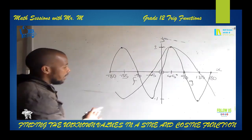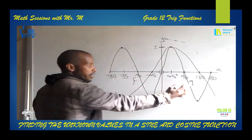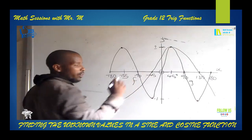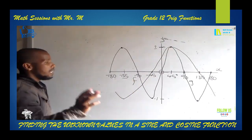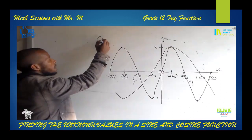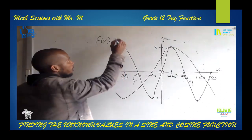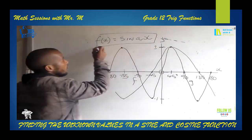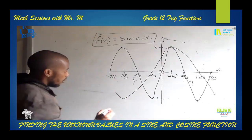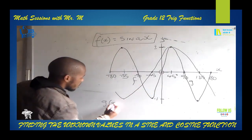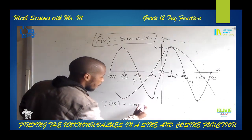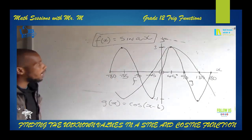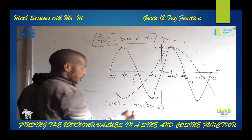We have F for the sine graph and G for the cosine graph. These two graphs have a common point at 1 and 45 degrees. For Y, F(X) equals sine AX — that is our basic equation for the sine graph. For the cosine, G(X) is equal to cos(X minus B). We are asked to find the variable A and the variable B.